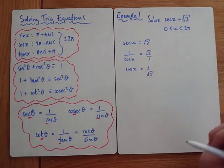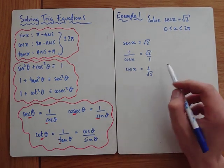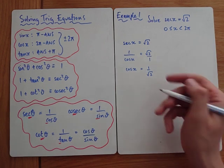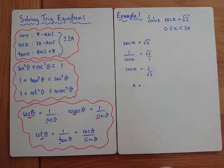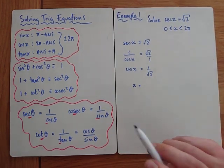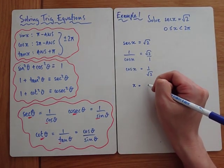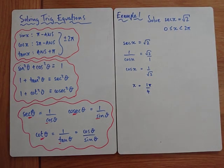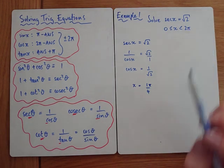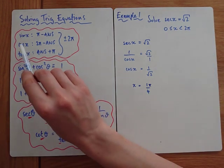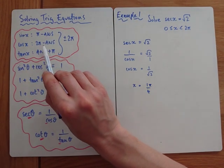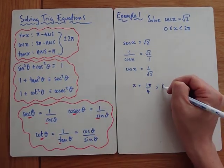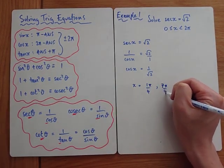Once you've got cos equal to a value, that's when we take cos inverse — basically the same as what we were doing last year. So x equals cos inverse of 1 over root 2. We're in radians, so the calculator gives us π/4. We're solving between 0 and 2π, so using the cosine rule: 2π minus answer gives 7π/4.